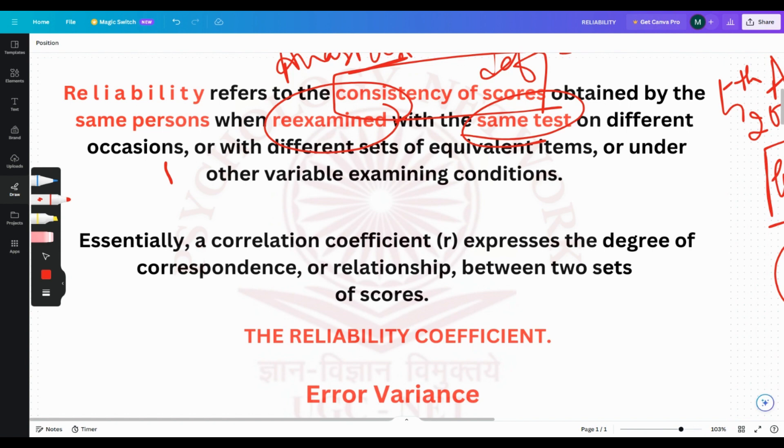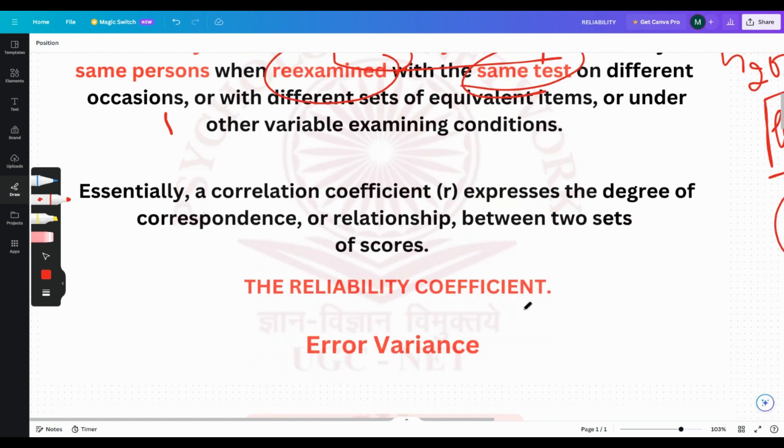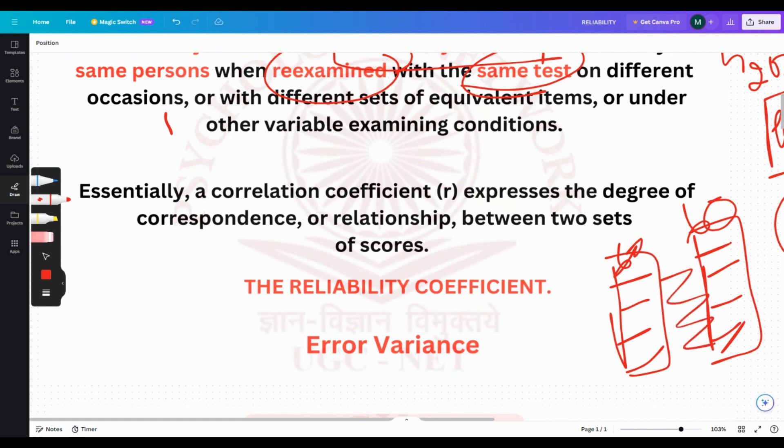Before moving to different types of reliability, we must understand the reliability coefficient. The reliability coefficient is basically part of correlation coefficient, which expresses the degree of correspondence or relationship between two sets of scores. If there are 60 scores here and 60 scores here, the interrelationship between them would give a score from 0 to plus 1. Nearer to plus 1 means higher correlation coefficient and a better relationship. Nearer to 0 means not so strong relationship.